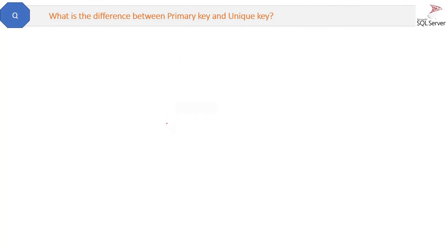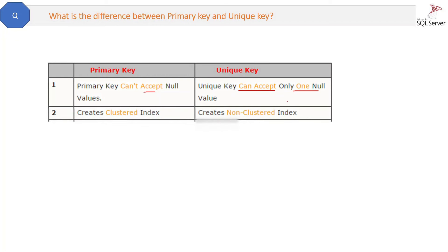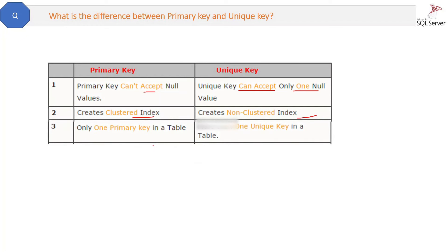What is the difference between primary key and unique key? First, a primary key cannot accept null values, whereas a unique key can accept null values — but only one null value is allowed. Second, when you create a primary key it will automatically set a clustered index on it, whereas with a unique key you have to set a non-clustered index manually. Third, only one primary key is possible in a table, while more than one unique key is possible in a table.